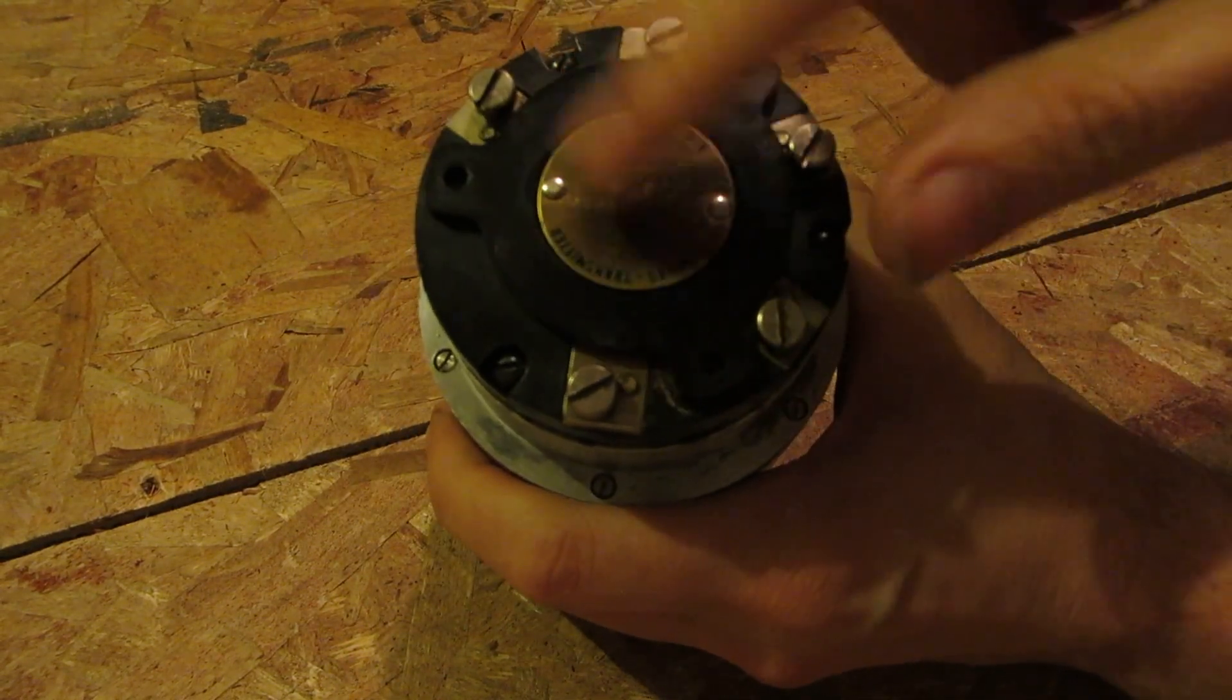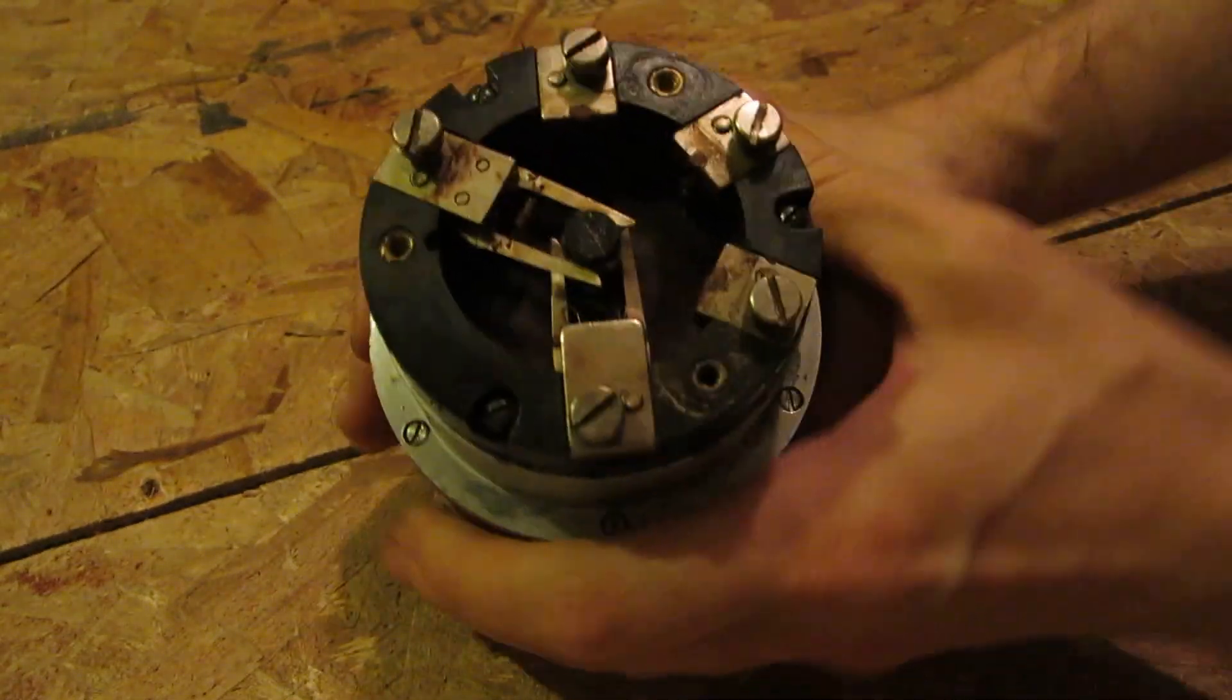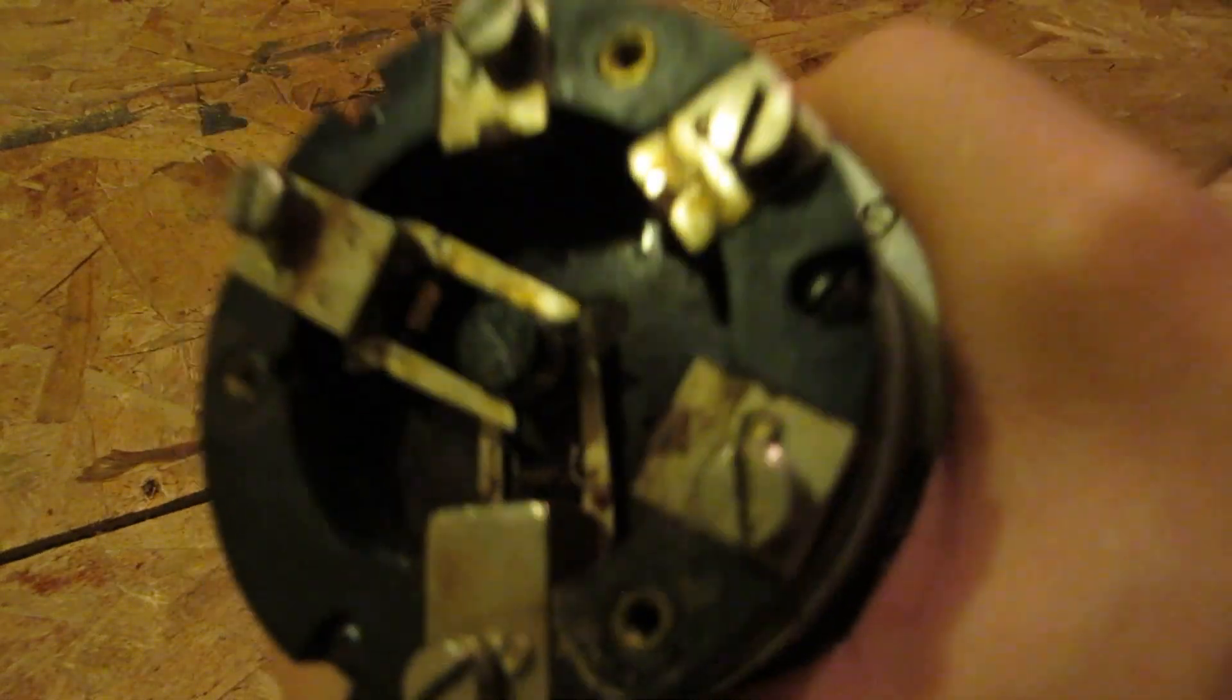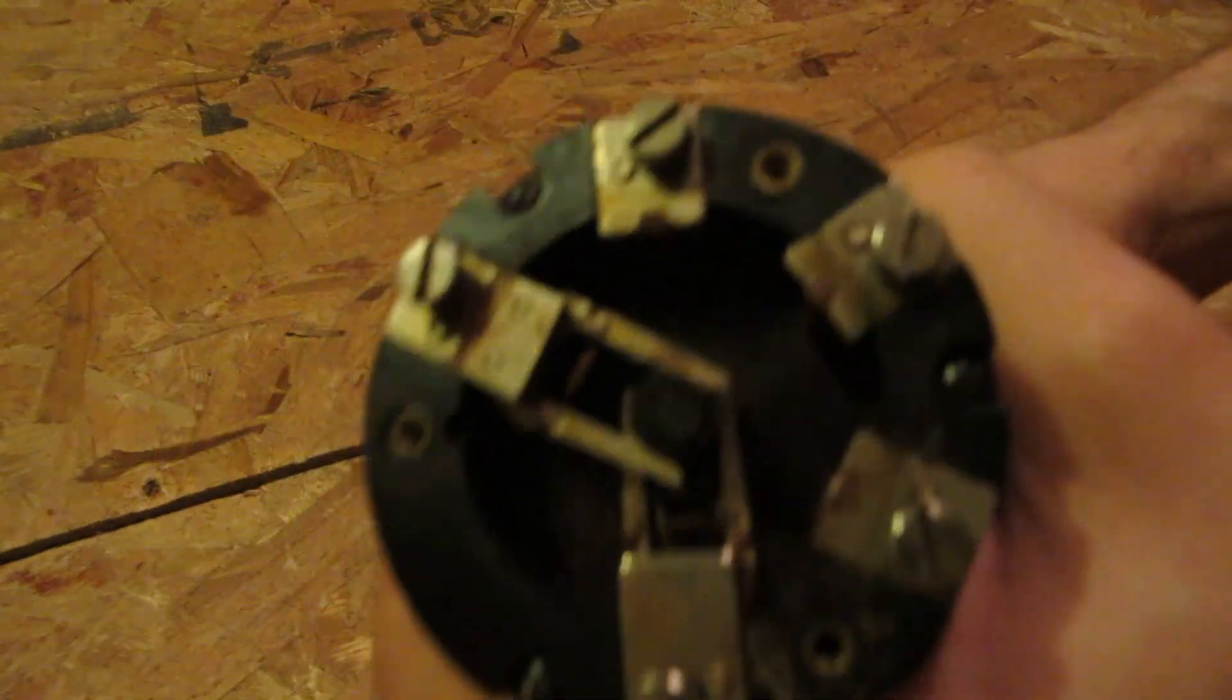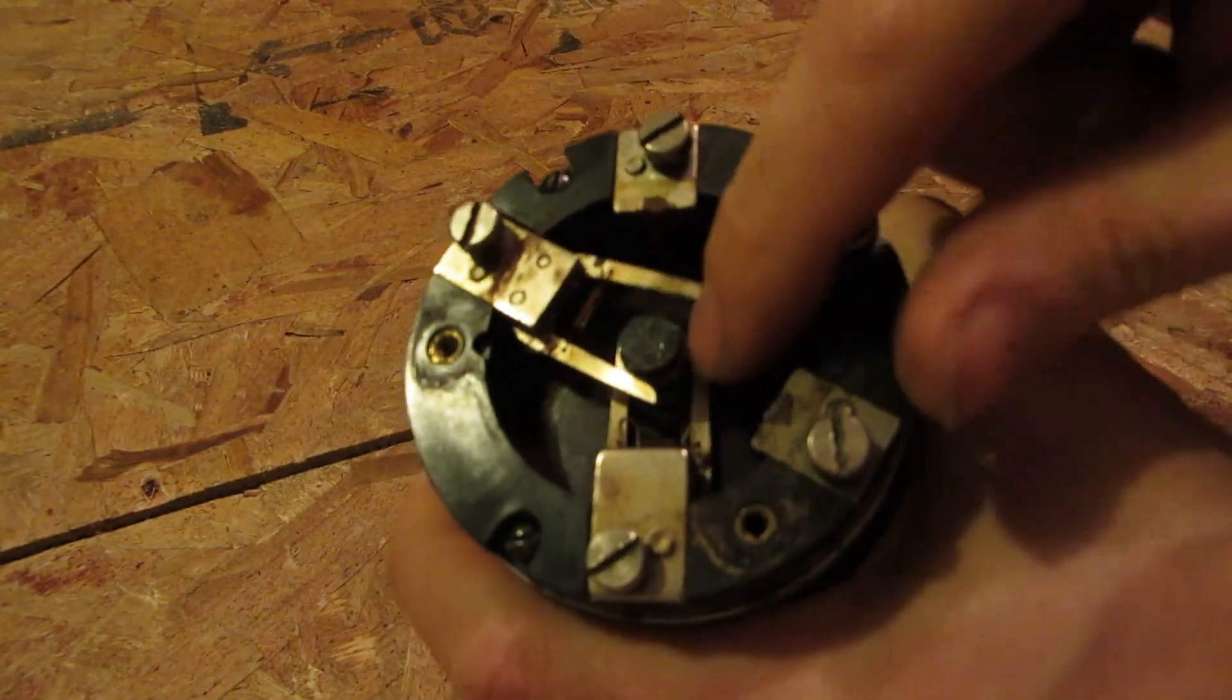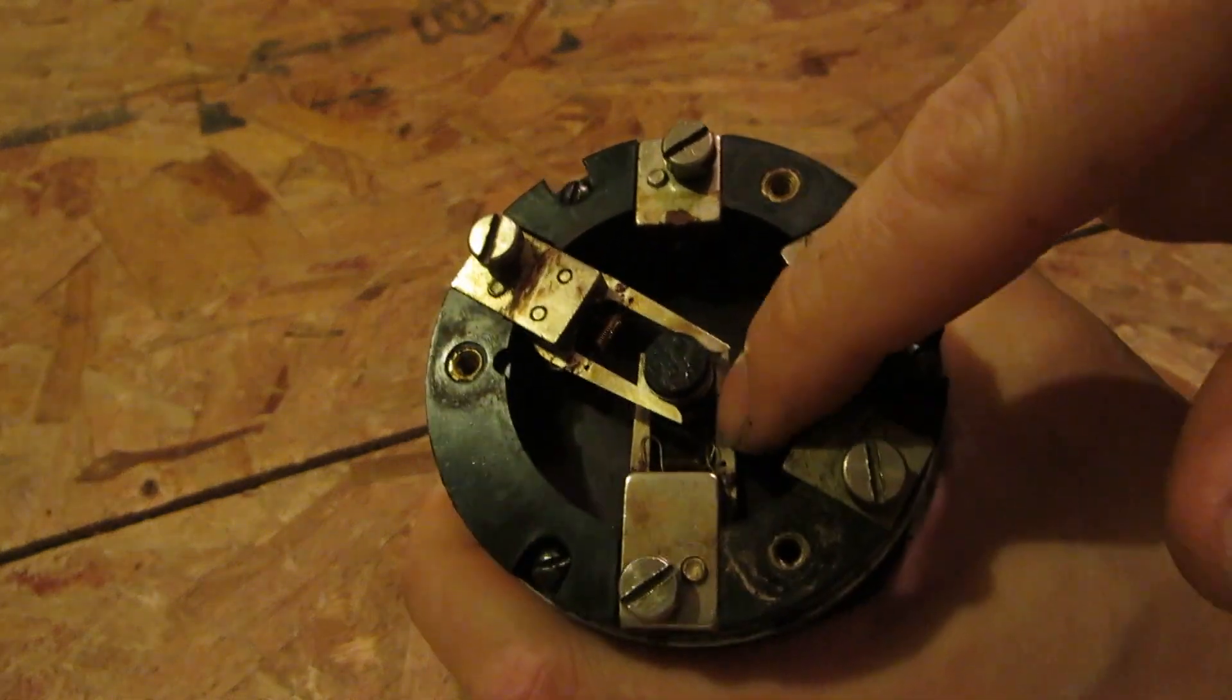So underneath this panel here, held on just by three screws, you've got some connections to the rotor part of this. One connection here, just spring loaded, and a second one underneath.